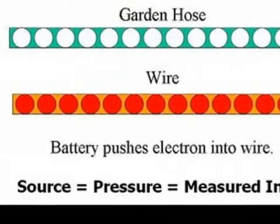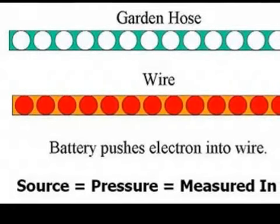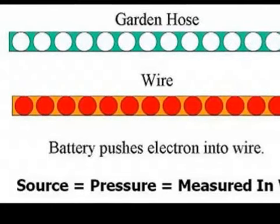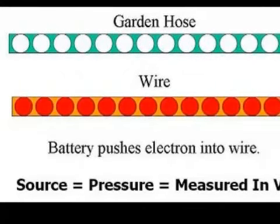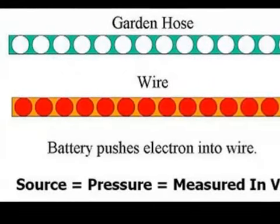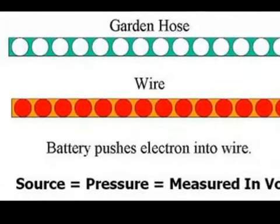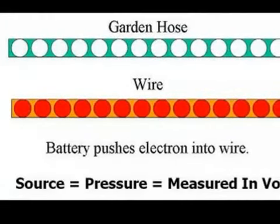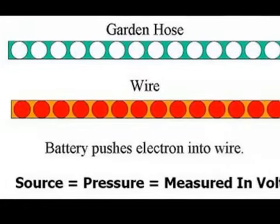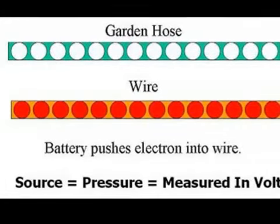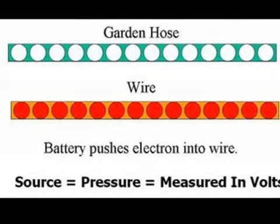For the first part of our example, we're going to hook up our source to our conductor. When we do this, the source tries to push an electron into the conductor. To visualize this, we're going to take our golf ball and push it into one end of the garden hose. When we do this, we have a domino effect — one golf ball bumping into the next one, until one tries to come out the other side. This is what happens inside of the conductor.